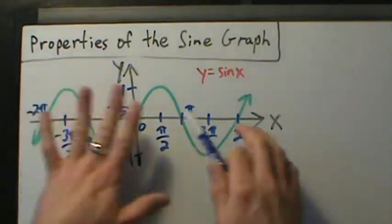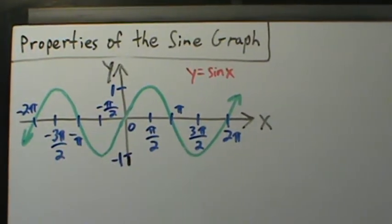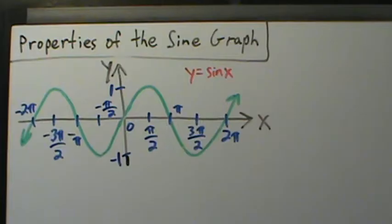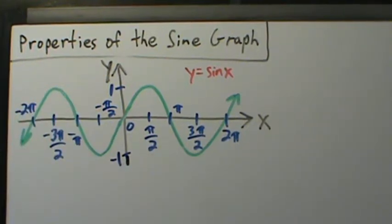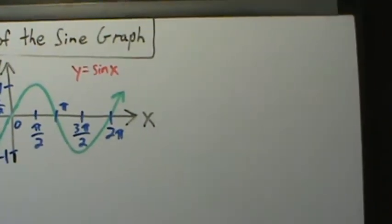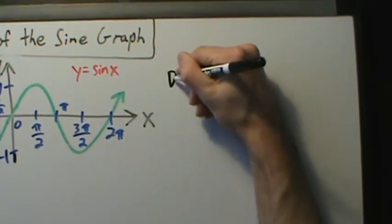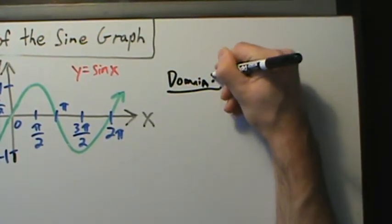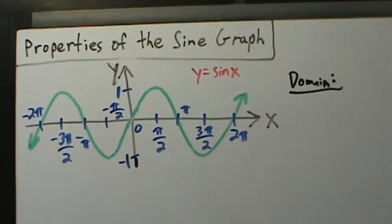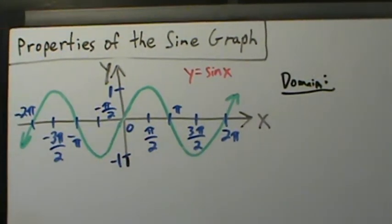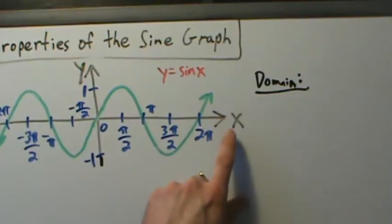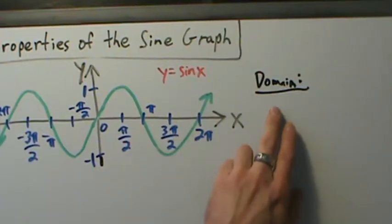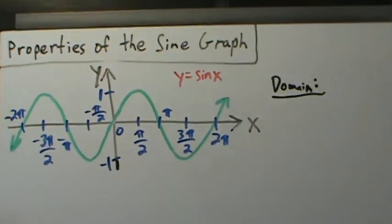Now that we have this in front of us, let's talk about some of the properties. We've talked about various properties of trig functions in earlier videos, but now we're going to talk about some more properties that are related to the graphs. Good ones to start with are domain and range — those are very important. Remember, the domain of a function is the set of all the x values for which the function is defined. Your variable might not be called x, but the domain is the set of all possible input values.